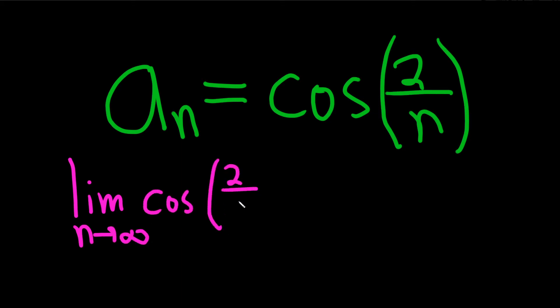And if we get an answer, then we can say the sequence converges. If we don't get an answer, we say it diverges. So if it's equal to a number, it converges.